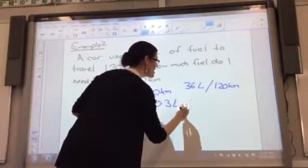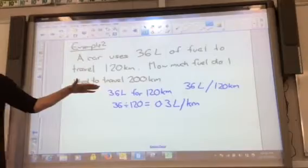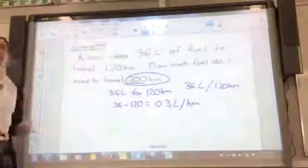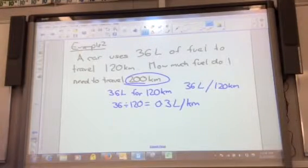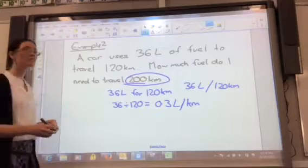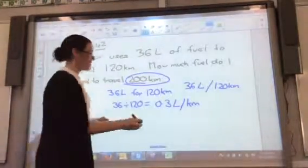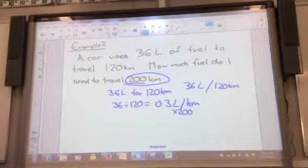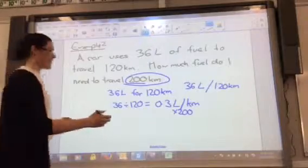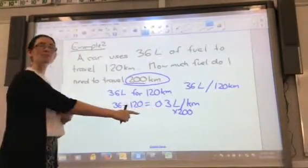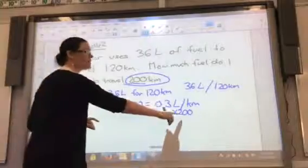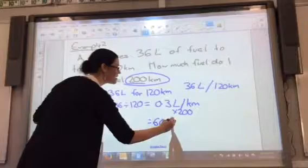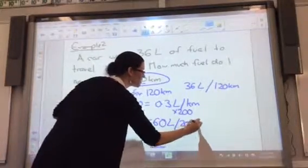What I'm going to do now is use this unit to answer the question. So I want to get to 200 kilometres. What do I need to do? So I'm going to multiply by 200, and that's going to give me 200 kilometres. So 0.3 times 200, what was that? 60. It was 60. So I've got 60 litres for 200 kilometres.